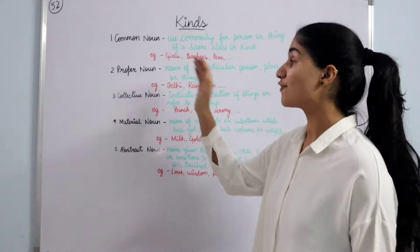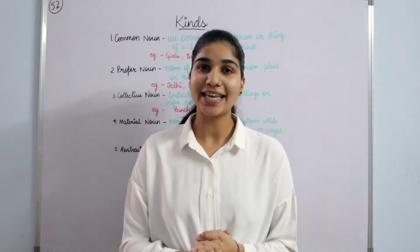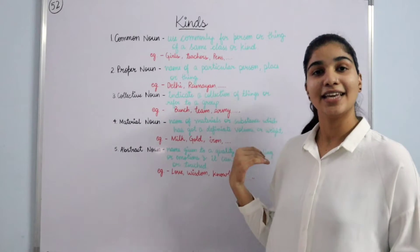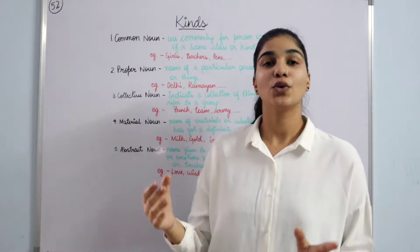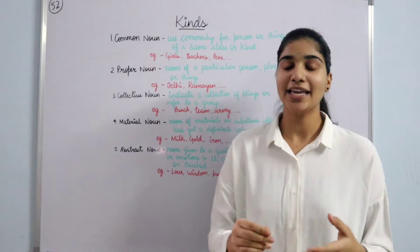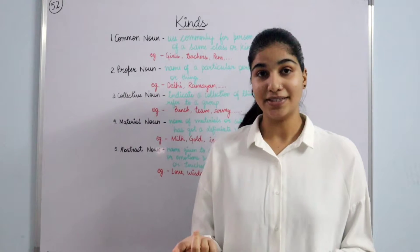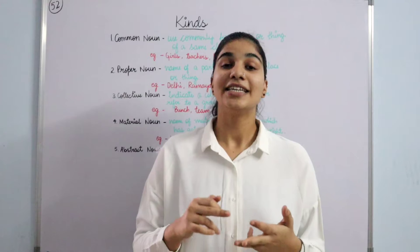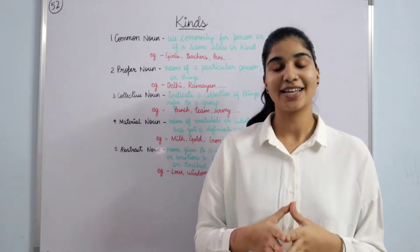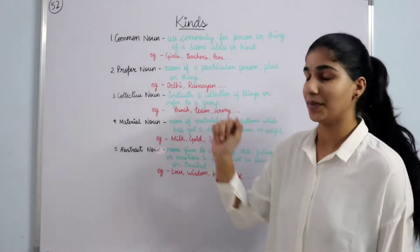First we have common noun, which is used commonly as the name of a particular person or thing to classify them in a group. For example, animals, girls, teachers — these all come in a group. These are the examples of common noun.